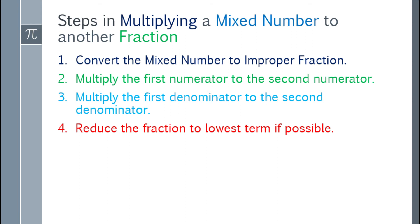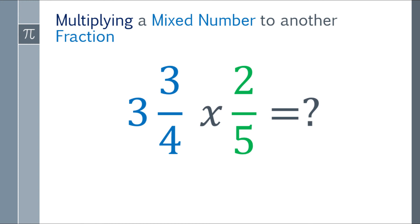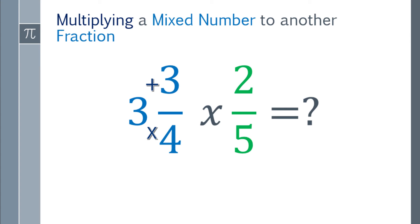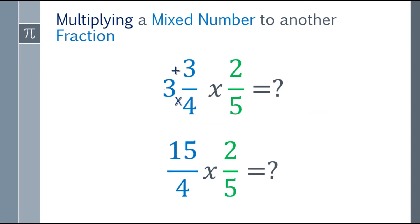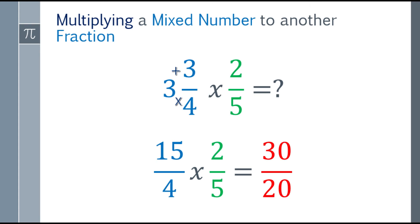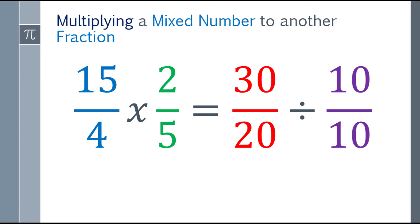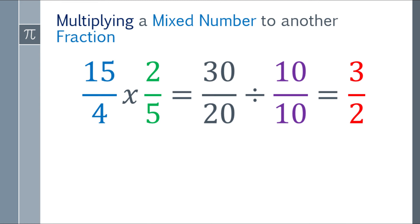Going back to the problem, three and three fourths times two fifths — we convert the mixed number to an improper fraction. Multiply the denominator by the whole number: four times three is twelve, then add the numerator three, giving fifteen. Copy the denominator, so we get fifteen over four. Now multiply: fifteen times two is thirty, and four times five is twenty, giving thirty over twenty. Divide by the greatest common factor of ten: thirty divided by ten is three, and twenty divided by ten is two. The answer is three halves.